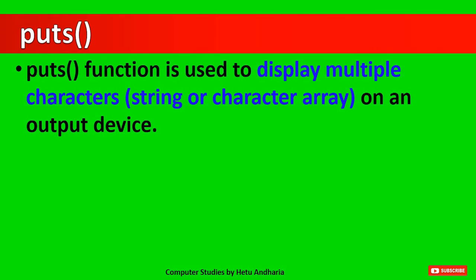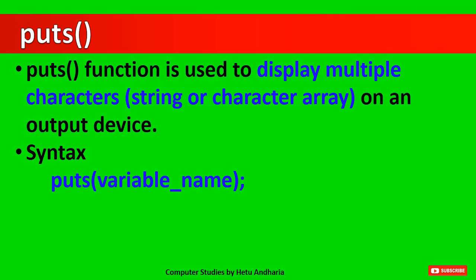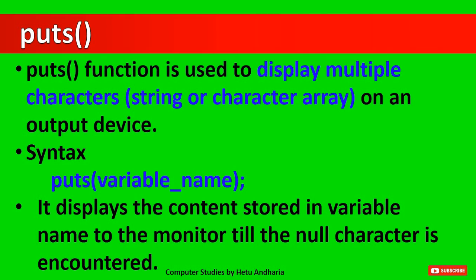The next function is puts. We may use the puts function to display multiple characters — that is, to display a string or character array — on an output device. The previous function could display only one single character, while here we can display a whole string. The syntax is puts with the variable name in brackets, where the variable name is a character array or string. The puts function writes the content stored in the variable to the monitor until the null character is encountered.